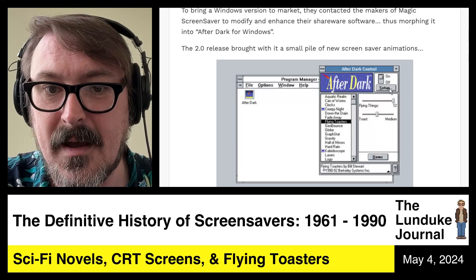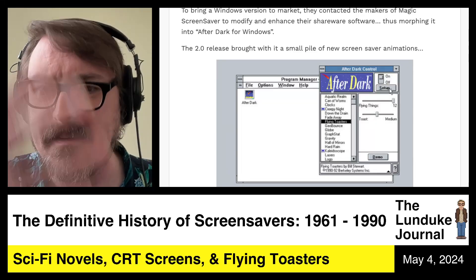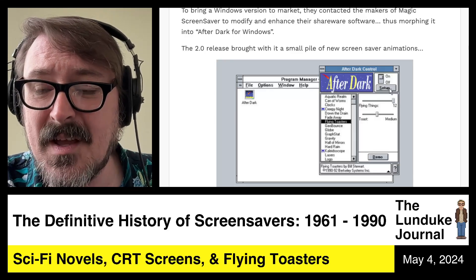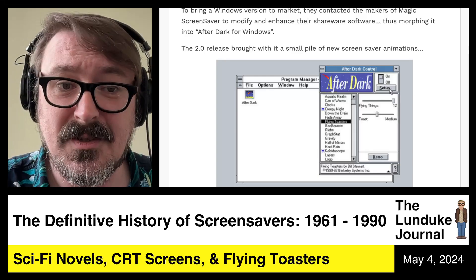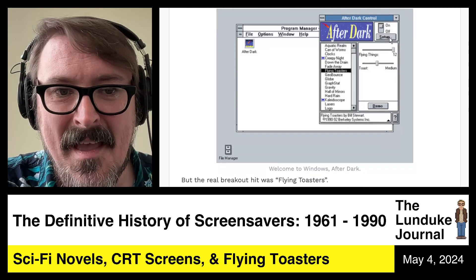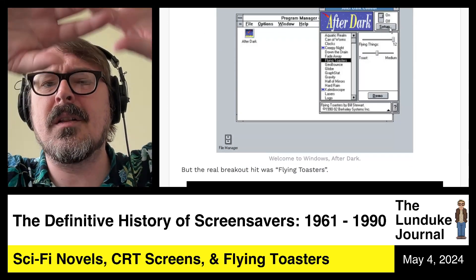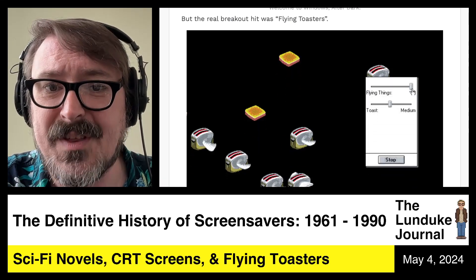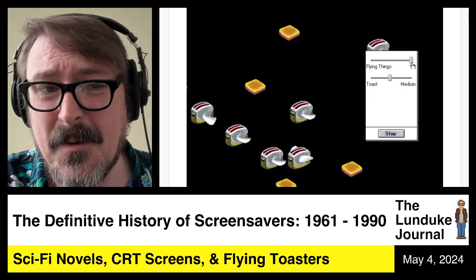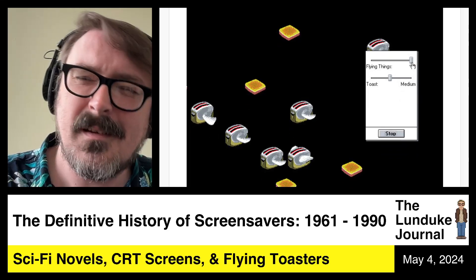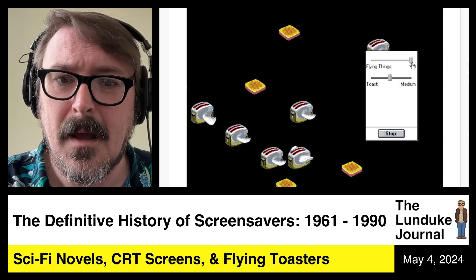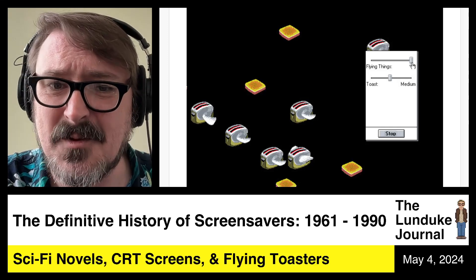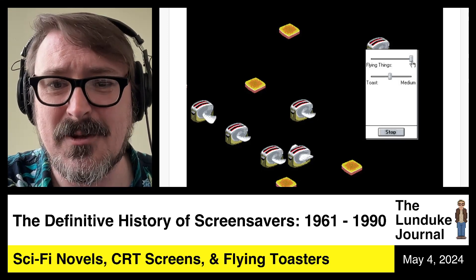The 2.0 release brought with it a small pile of new screensaver animations. The real breakout hit of all the different displays was the Flying Toasters. This became synonymous with the After Dark screensaver package — in fact it became the most famous of all screensavers. Until later in the 90s a few more appeared, but Flying Toasters at this point was the bee's knees, the king of screensavers — toasters flying through the land.